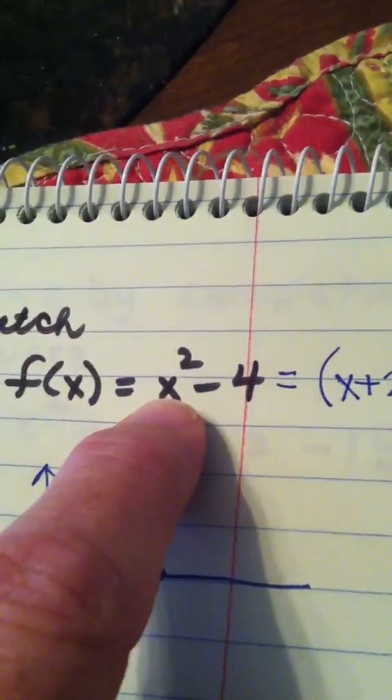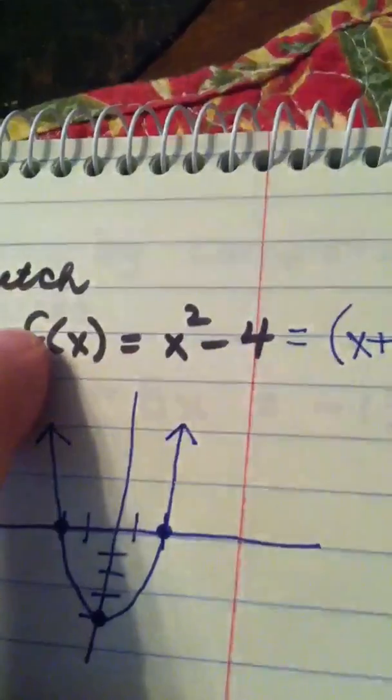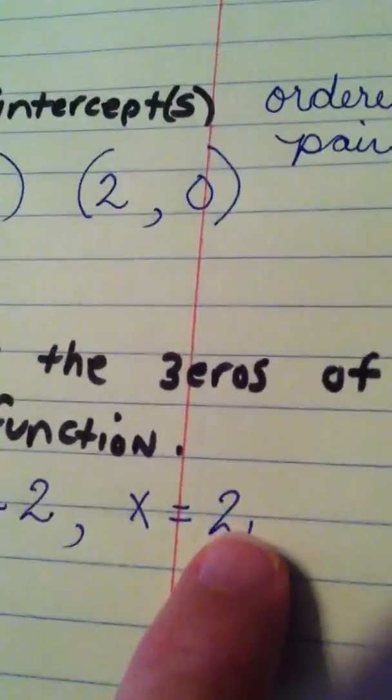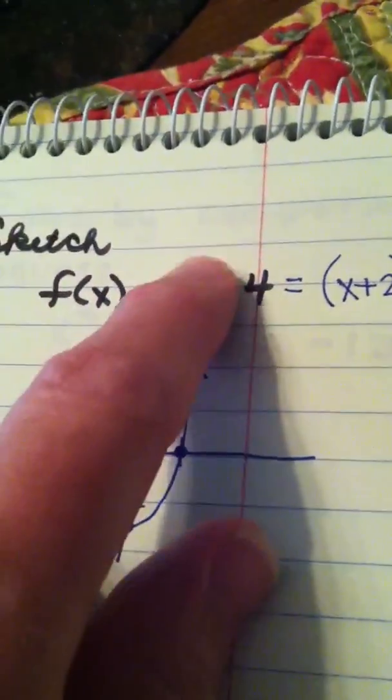What if I plugged in a negative 2? Negative 2 squared is 4. 4 minus 4 is 0. Got it? And if I plugged in a 2. 2 squared is 4. 4 minus 4 is 0.